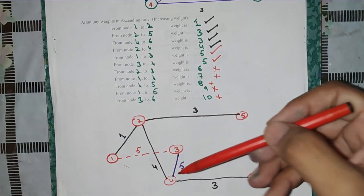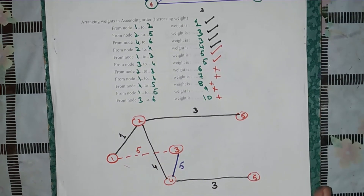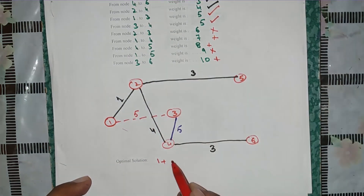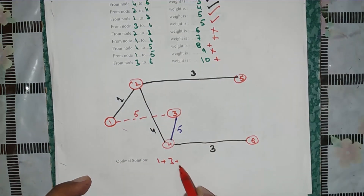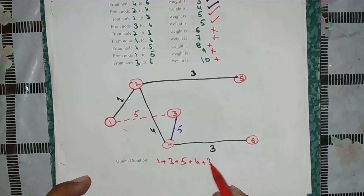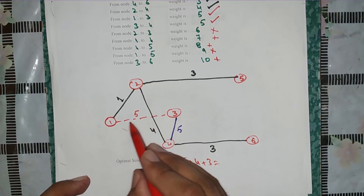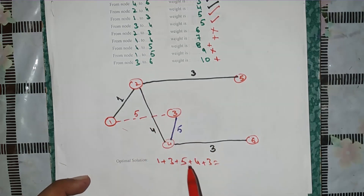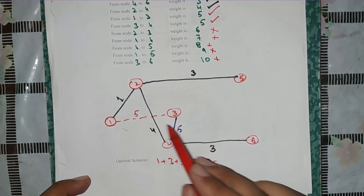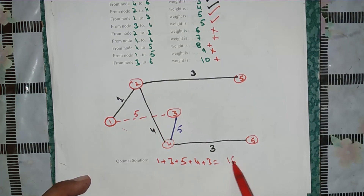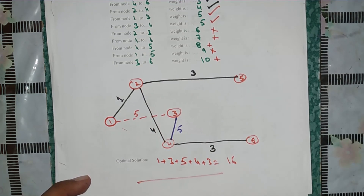Now if we find the optimal solution, the weights are: 1, 3, 3, 4, and 5. From the two arcs with weight 5, you use only one since only one arc can be used at a time. So the total is: 1 + 3 + 3 + 4 + 5 = 16. That is the minimum spanning tree total weight of 16.